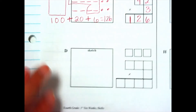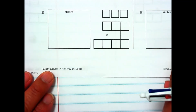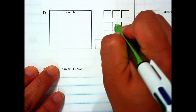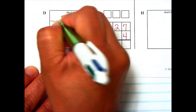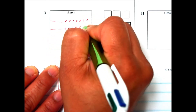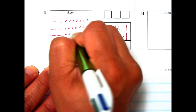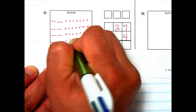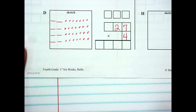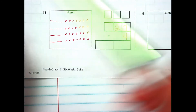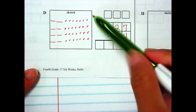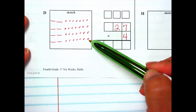Letter D: we have 27 times 4. Sketch it out: 10, 20, 1, 2, 3, 4, 5, 6, 7 — four rows of 27. Let's count how many ones we have. We have 7 ones in each row, so count by 7s: 7, 14, 21, 28. I have 28 ones. Do I have enough to regroup? Yes, I do. I'm going to box in 10: 7 and 3 more is 10.